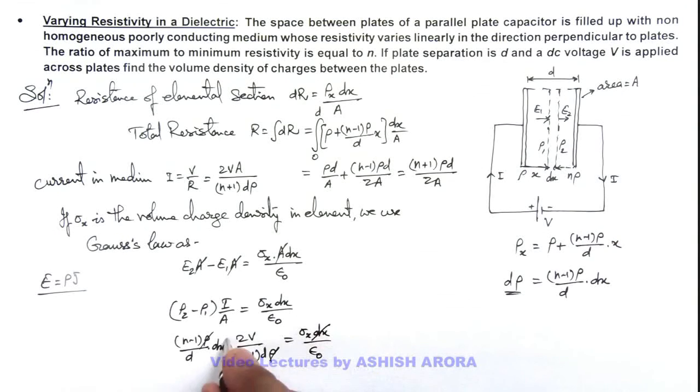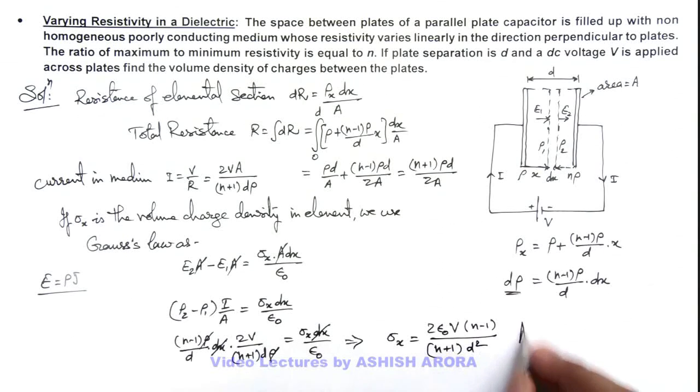Here dx also gets cancelled out. And on simplifying, we are getting the value of σₓ is equal to 2ε₀V(n-1) divided by (n+1) multiplied by d². That will be the answer for this problem. This is the volume charge density at a distance x between the plates.